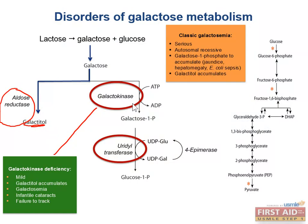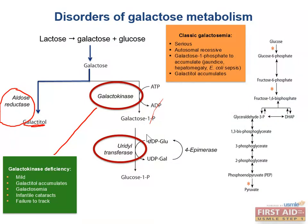We have another disorder called classic galactosemia, and it's a more serious autosomal recessive deficiency of galactose 1-phosphate uridyl transferase. A deficiency of uridyl transferase causes galactose 1-phosphate and galactitol to accumulate inside cells, causing some of the same effects as galactokinase deficiency such as infantile cataracts, as well as new symptoms from galactose 1-phosphate accumulation like jaundice, hepatomegaly, or E. coli sepsis in neonates.